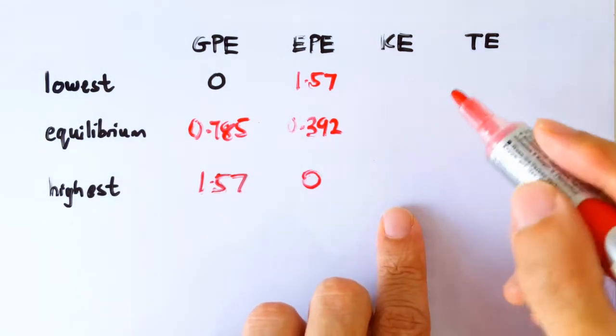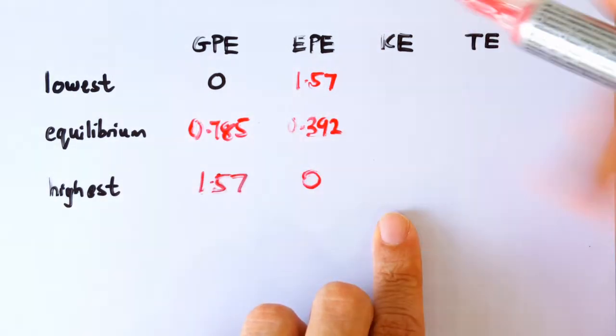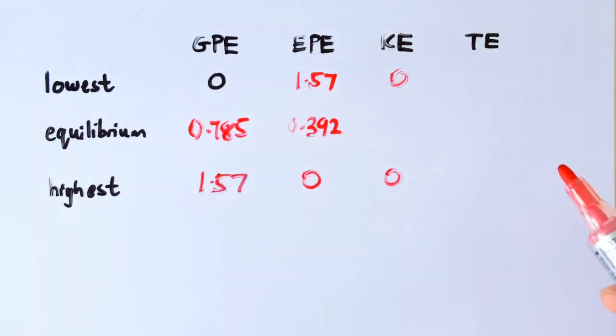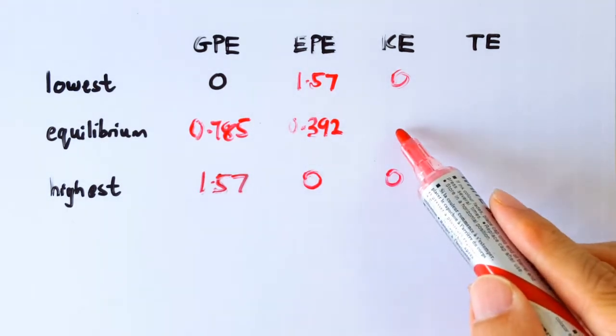Next, the KE column. This is an oscillation, so obviously at the extreme positions, the KE should be zero because the mass is at rest. Oh, I don't think we can fill in this box yet.